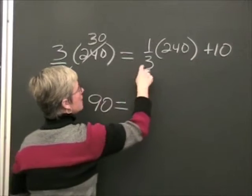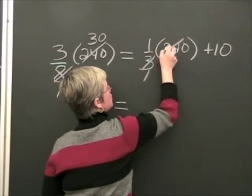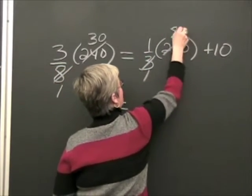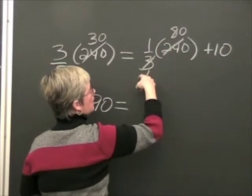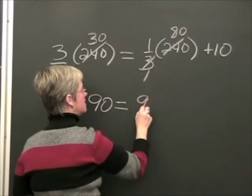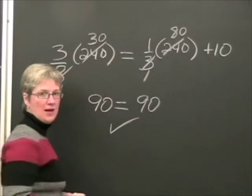And over here, three goes into three once and into 240 eighty times. Eighty times one is 80, and 80 plus 10 is also 90. So it checks.